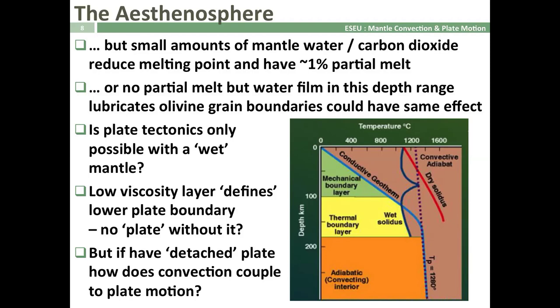However, both imply a wet mantle of sorts, and the question has to be: can we only have plate tectonics on a planet with a wet mantle? Also, the lower viscosity layer essentially defines our plate boundary. Without a detachment at the base of the lithosphere, we don't have a plate. But if we've got a detached lithosphere, how does convection within the mesosphere couple to our lithosphere driving plate motion?